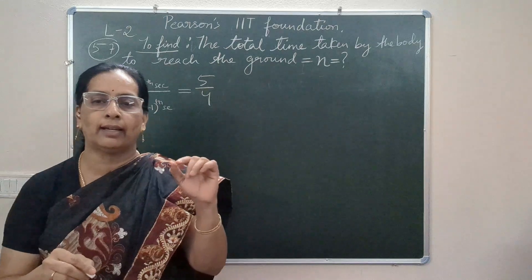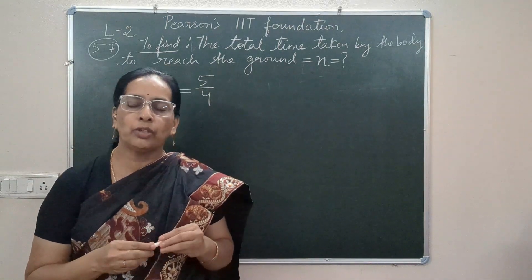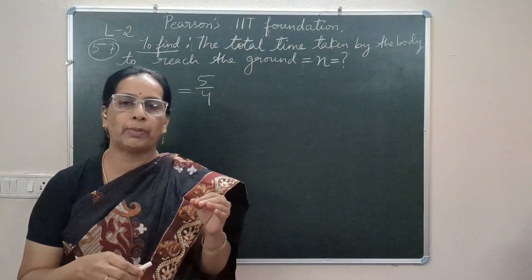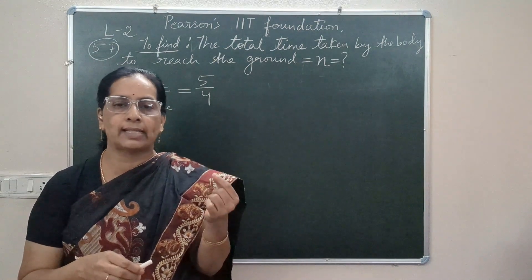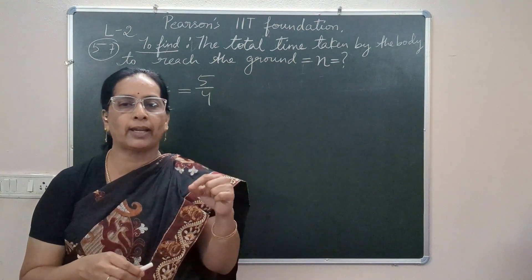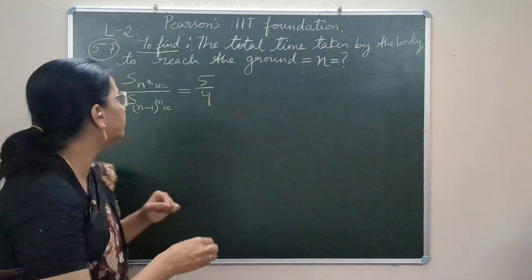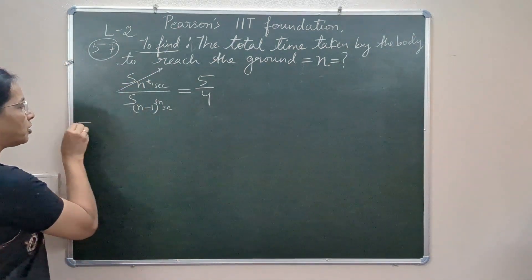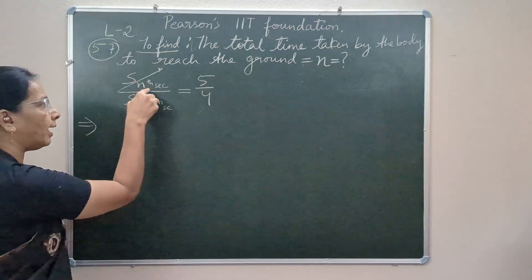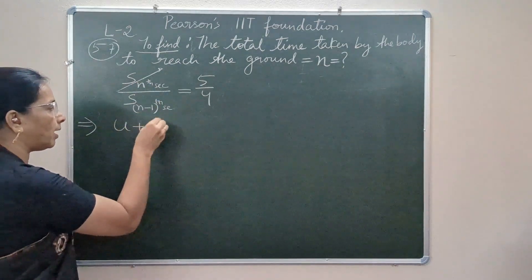We are using the concept of distance traveled by the body in nth second, that is Sn is u plus g by 2 times twice n minus 1. So here I'm going to substitute the formula for distance traveled by the body in nth second, that is u plus g by 2 times twice n minus 1.